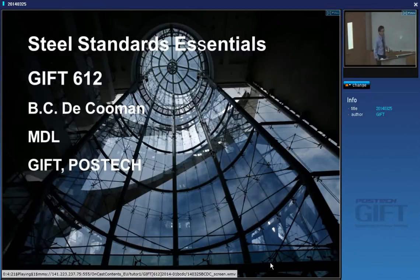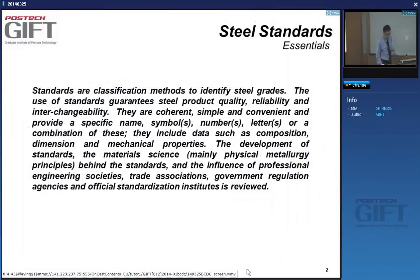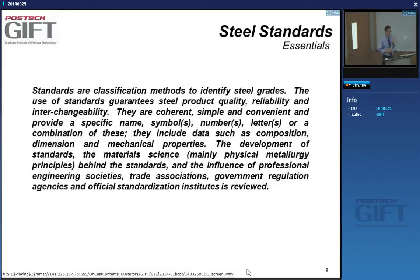In practice, when people buy and sell steel, they're not involved in research at all. They just want a steel for their application, so when they describe steels they use standards. Standards are basically classification methods to identify steel grades — types of steels. They guarantee quality, product quality, reliability, and interchangeability — you can compare two steel products with one another.